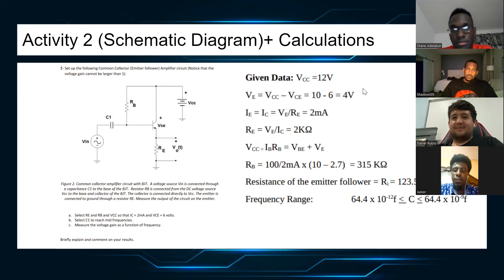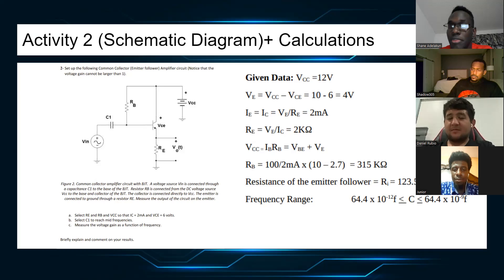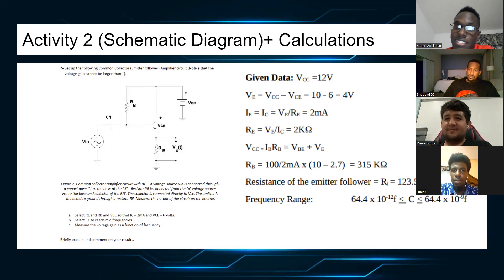This is the given data because it's the same base and we're using the same voltages. So VCC equals 12 volts. Our VE is going to be 4 volts. Our IE is going to be 2mA. RE is 2 kilohms. RB, we find that it's going to be 315 kilohms this time. And our frequency emitter follower RE is 123.5 kilohms. Our frequency range is going to be 64.4 times 10 to the negative 12 less than or equal to C less than or equal to 64.4 times 10 to the negative 10 frequency.